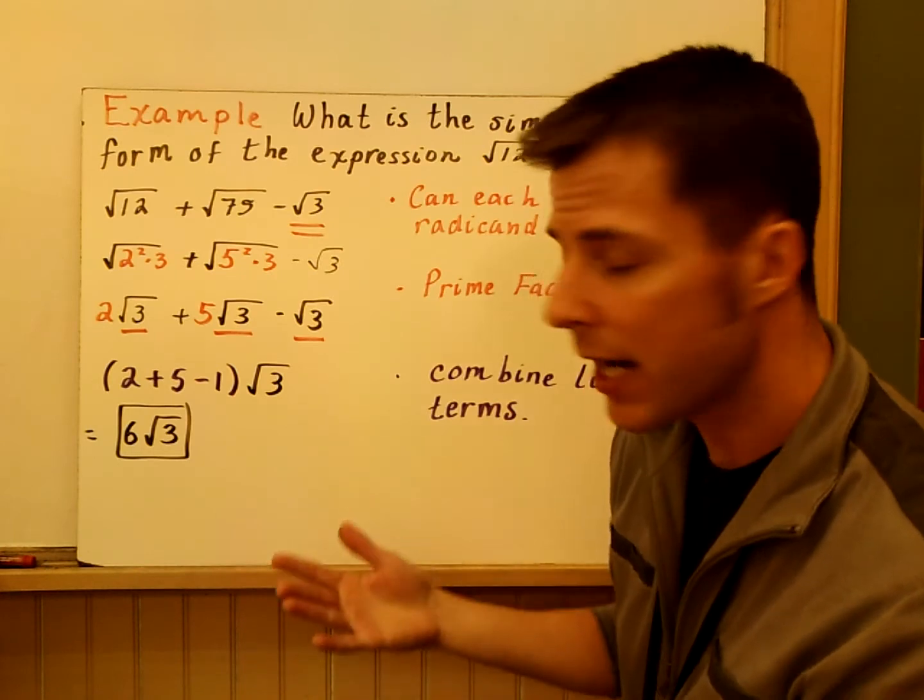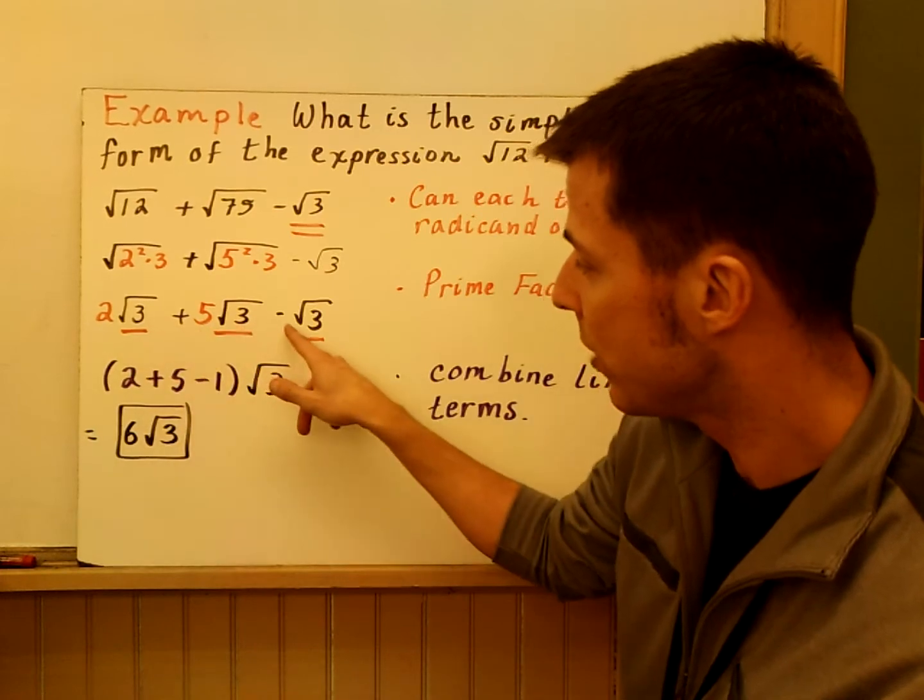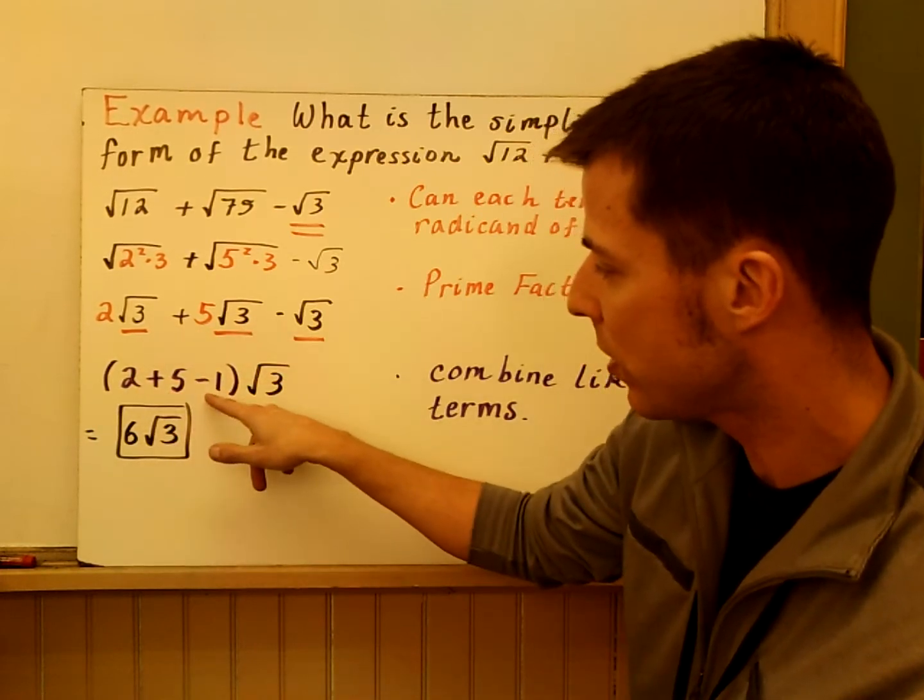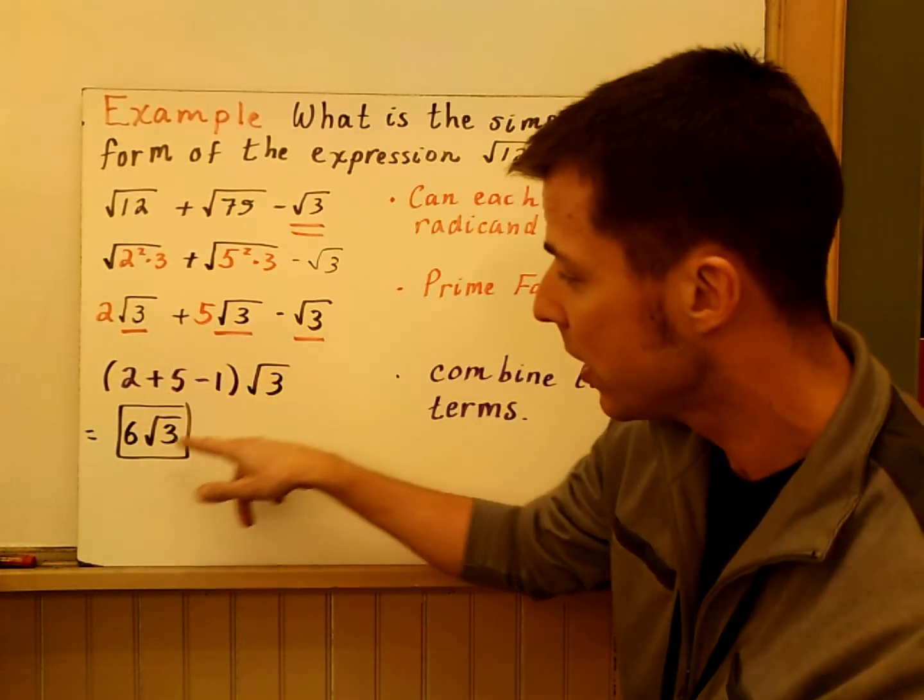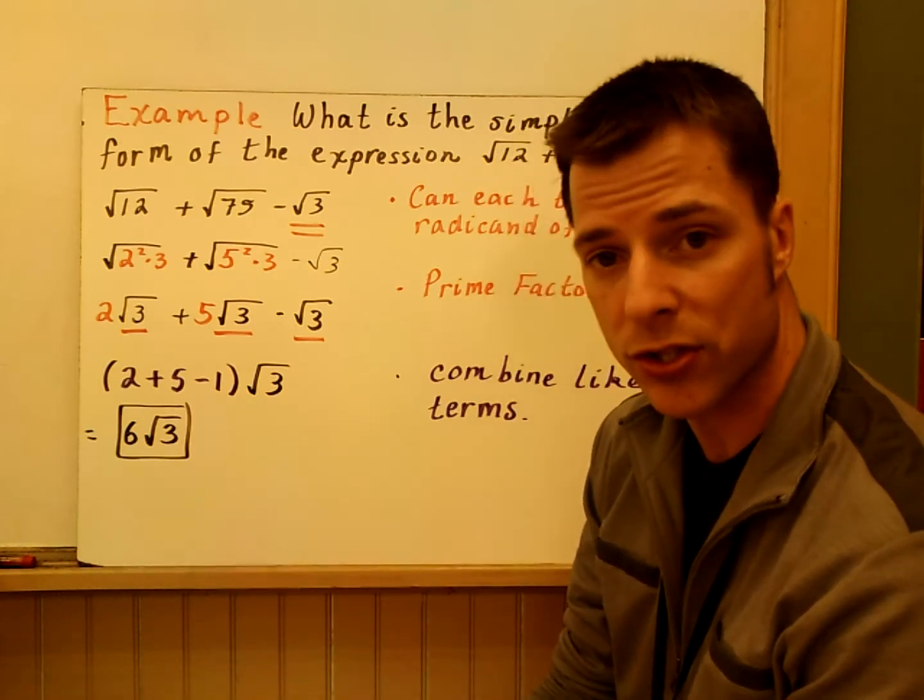So now you can use that distributive property rule. We're combined like terms. 2, 5, and negative 1. So 2, 5, negative 1, all times root 3. And that just becomes 6 root 3. So that's our final answer, 6 root 3.